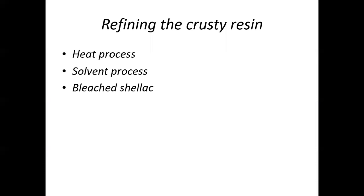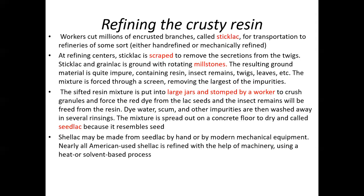For refining the crust resins, there are three types of processes: heat process, solvent process, and bleached shellac. Workers cut millions of encrusted branches — called sticklag — for transportation to refiners, either hand-refined or mechanically refined. At refining centers, sticklag is stripped to remove secretions from the twigs. Sticklag and rindlag are ground with rotating millstones, resulting in an impure material containing resins, insect remains, twigs, and leaves.